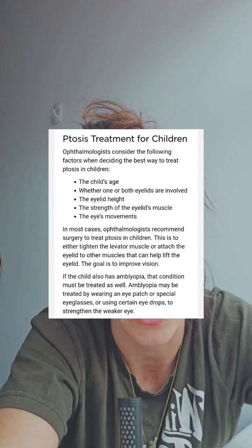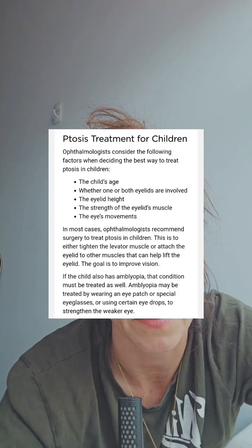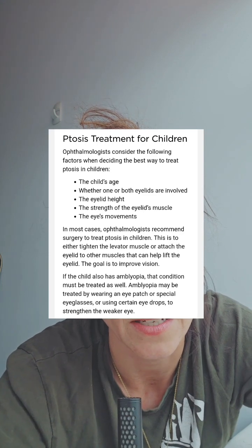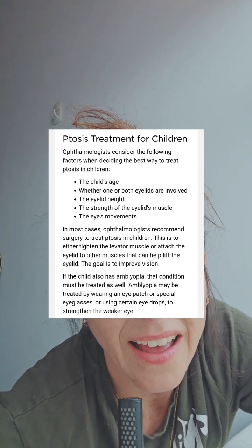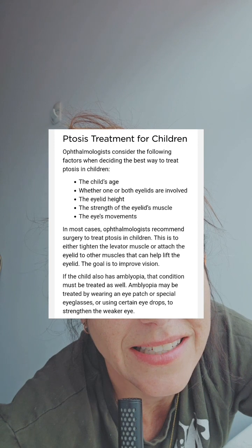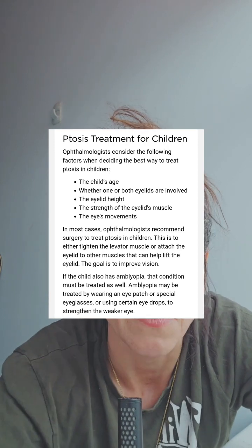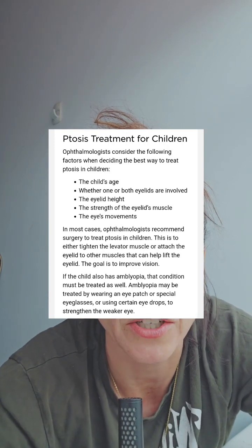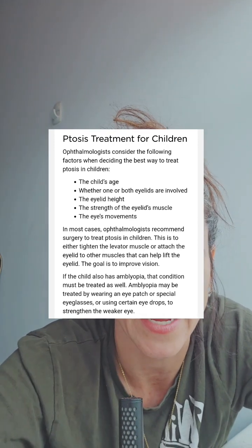Ptosis treatment for children — I'm just going to skip down past the bullet points. Ophthalmologists recommend surgery to treat ptosis in children. That is what I have. I was born with no muscles in my right eyelid, so I did have to have three surgeries by the time I was six in order to correct that as best as they could.